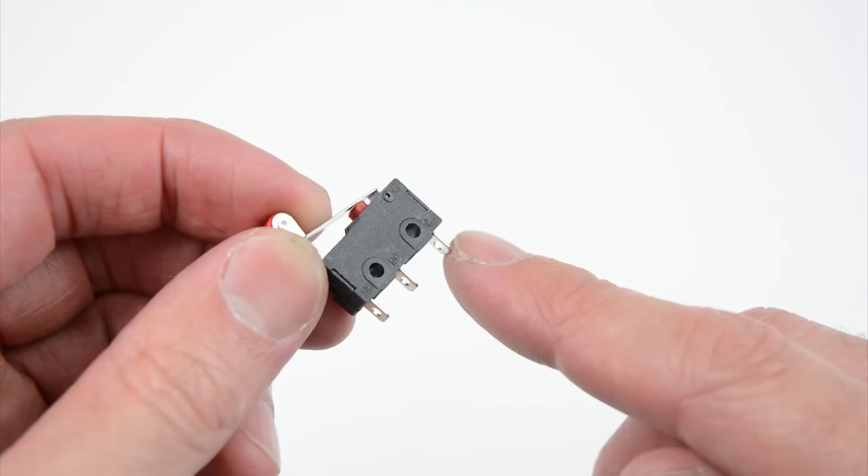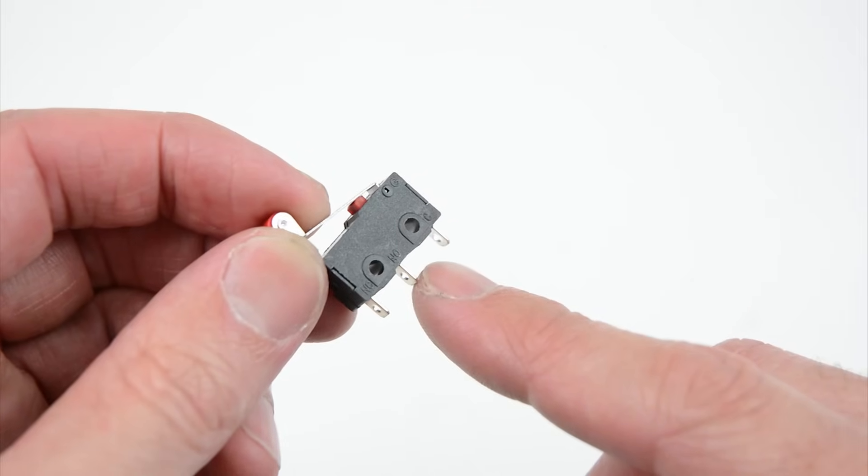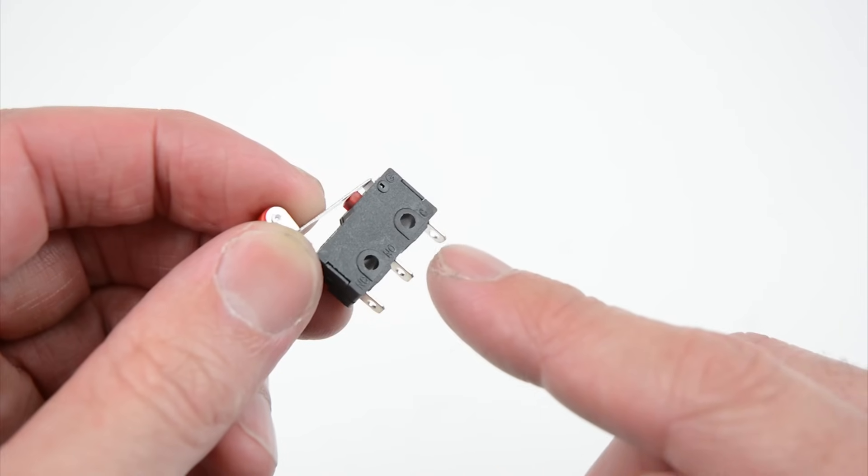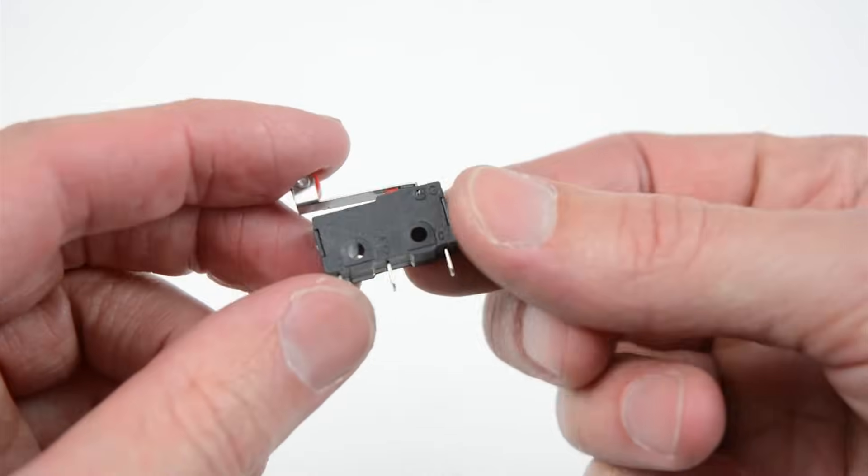The switches have three terminals marked C for common, NO for normally open and NC for normally closed. We will wire to the common and to the normally open terminals making the switch only active when it is pressed.